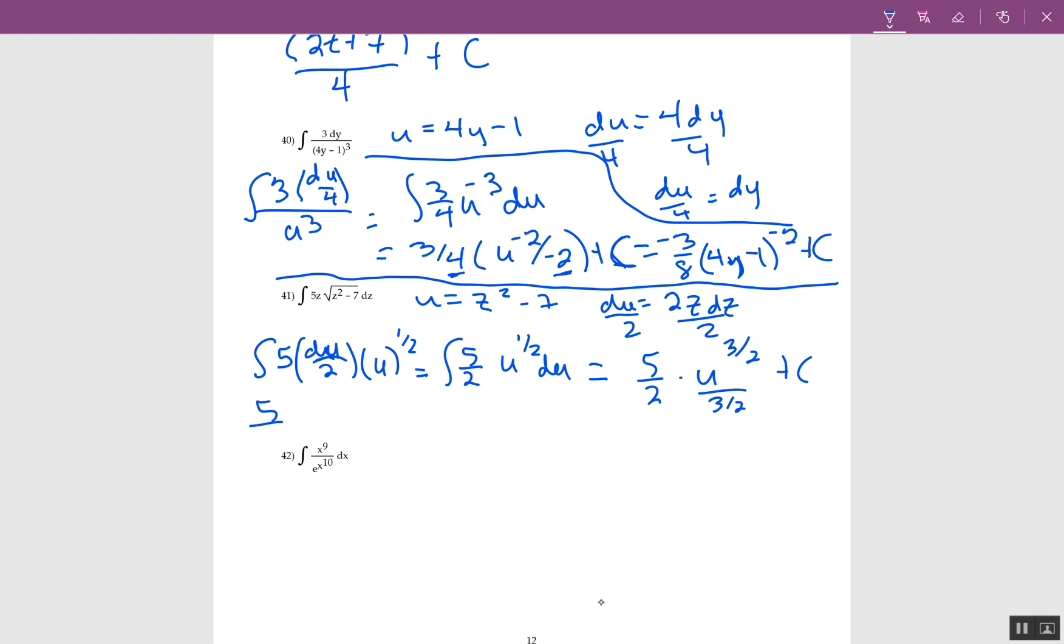Let's flip that over. I have 5/2, I have 2/3, I have u which is z squared minus 7. The 2's cancel, so I get 5 over 3. I have z squared minus 7 to the 3/2 power. Let me write that clearly: this is 3/2 plus c.